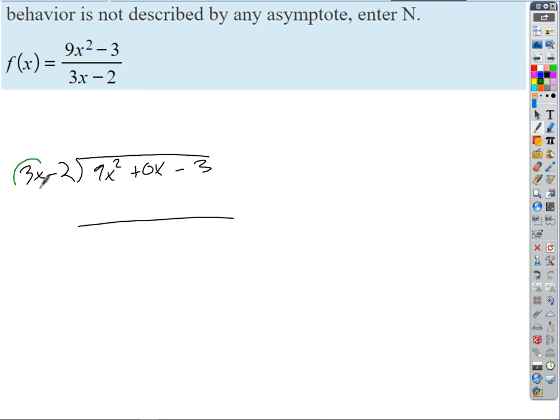Perfect. So we want, how many times does the leading term outside divide into the leading term inside? 3x. Good. So the first term of our answer is 3x, right? So we're going to multiply through, what did we get, minus 6x?